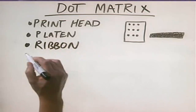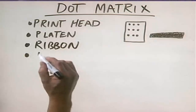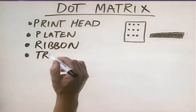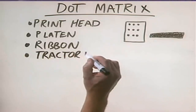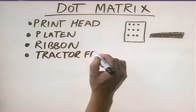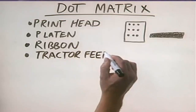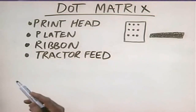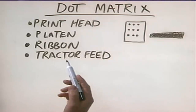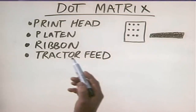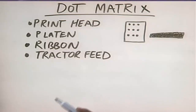We also have a ribbon, and then we also have a component called the tractor feed. The ribbon contains the ink that we're going to transfer onto the paper, and the tractor feed is used to draw continuous feed paper up through the printer.